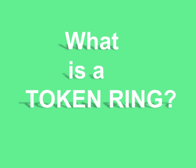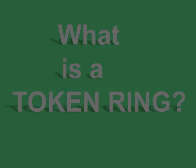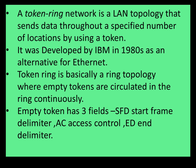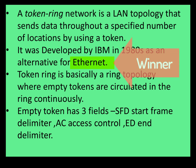What is a Token Ring? A Token Ring Network is a LAN topology that sends data throughout a specified number of locations using a token. It was developed by IBM in the 1980s as an alternative for Ethernet, but Ethernet won that competition.